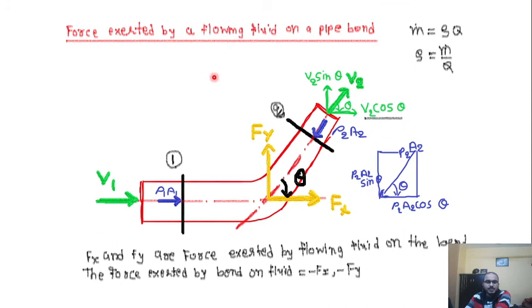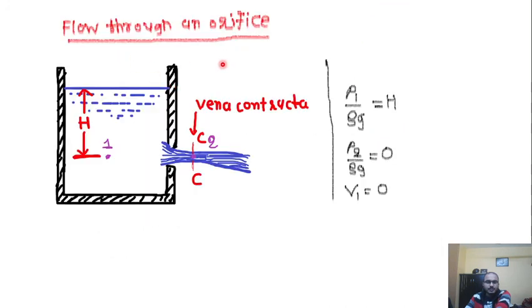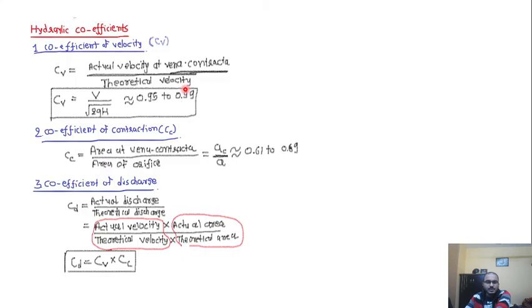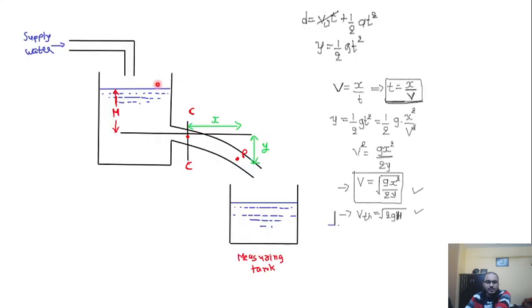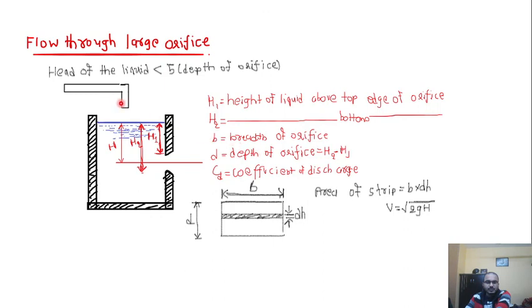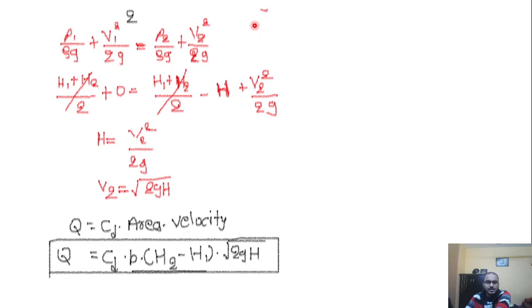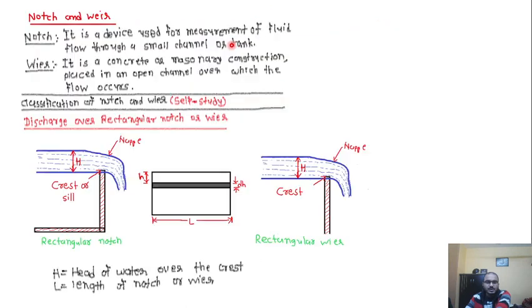Then the momentum equation and force exerted by a flowing fluid on a bend or pipe. Then flow through orifice, hydraulic coefficients, determination of Cd, Cv, and Cc, flow through large orifice, discharge through fully submerged orifice, and discharge through partially submerged orifice.